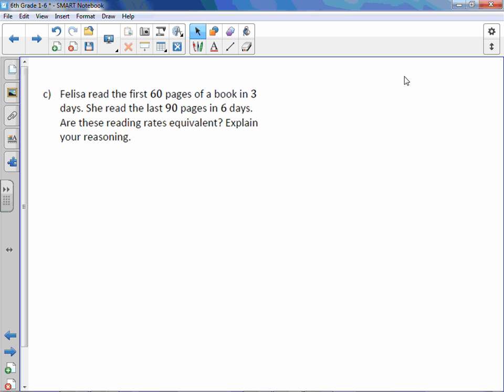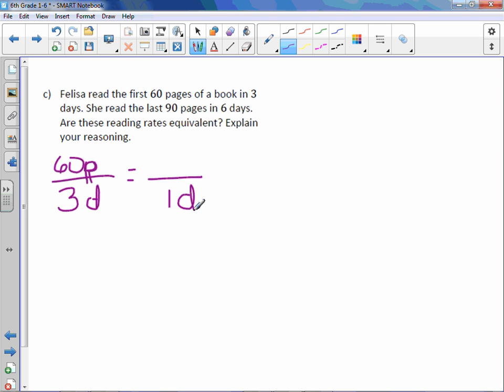Letter C. Felisa read the first 60 pages of a book in 3 days. She read the last 90 pages in 6 days. Are these reading rates equivalent? Explain your reasoning. So we have 60 pages in 3 days. To make it a unit rate, we need the denominator to be 1. To go from 3 to 1, we divide by 3 and do the same in the numerator. 60 divided by 3 is 20 pages. So 20 pages per day is the first rate.